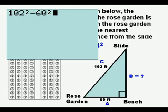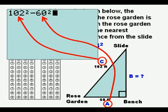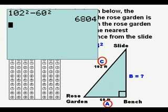And now we substitute in using the calculator for C, 102, for A, 60. And we get B squared equal to 6,804.